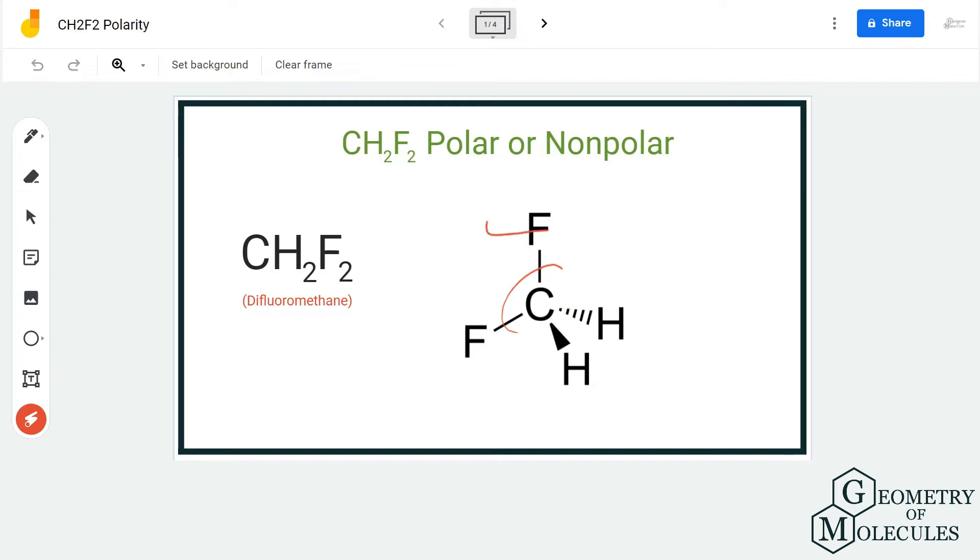Now if you look at its geometry, the two fluorine atoms are on one side and two hydrogen atoms are on the other side. This geometry is also known as tetrahedral.